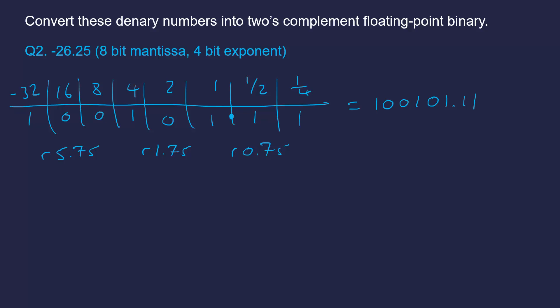My next step is to move our binary point into our standard position, which is our normalized position. We're moving one, two, three, four, five - so five places. It's a left movement of our binary point, so it's a positive exponent - the magnitude is bigger than one. Our answer is going to be 1 0 0 1 0 1 1 1 as our eight-bit mantissa, and our exponent is five, which is 0 1 0 1 in four-bit two's complement, with MSB zero because it's positive.